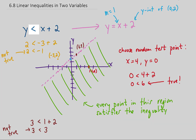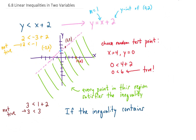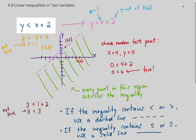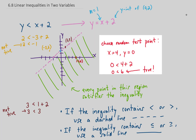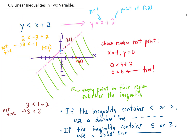However, if the original inequality had an equal sign in it, every point on this line would be in the solution set, so we would make that line solid. In every example, we take the inequality, graph it as if there's an equal sign, then choose a test point above or below the line to see if it satisfies the inequality. If it does, shade that region; if not, shade the other side. Use a dashed line for strict less than or greater than, and a solid line for less than or equal to or greater than or equal to.